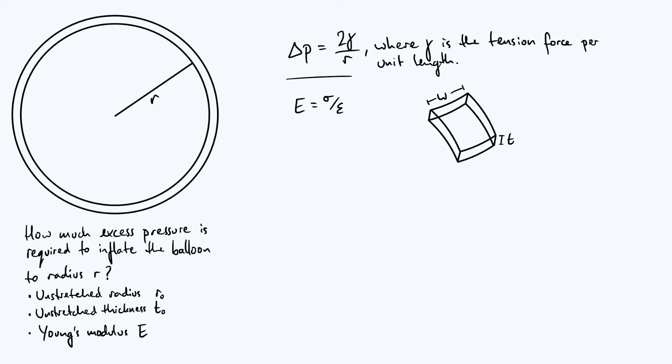I've defined the width of that approximate cuboid to be W and I've said it has a thickness of T. T is different from T₀, which I originally defined as the unstretched thickness, because you can see that as the balloon inflates, the skin is going to get thinner and thinner, so that T on the diagram is a function of radius.